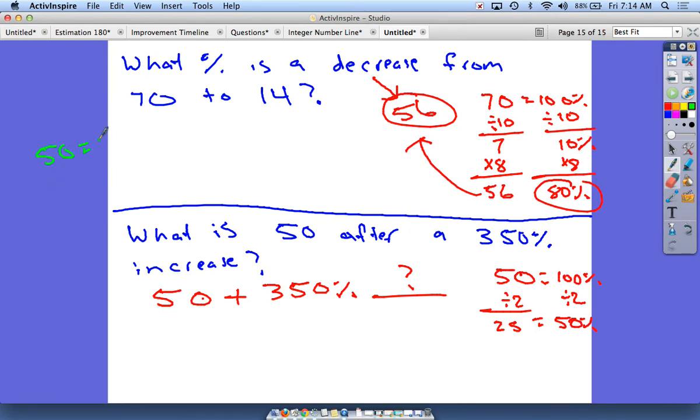50 is 100 percent, 50 is 100 percent, and then I have down here I have 25 is 50 percent. If I add all those up, 50, 50, 50, and 25 would be 175. Yep. And then 100 plus 100 plus 100 plus 50 is 350 percent.